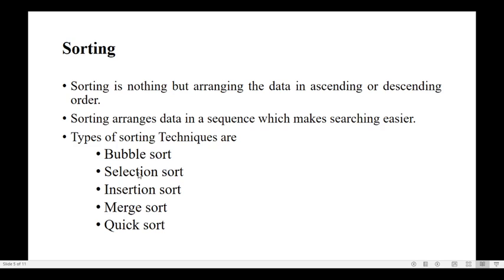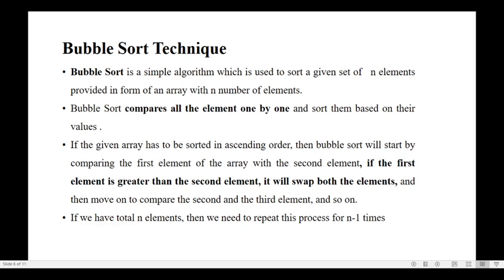In this session we are learning bubble sort. Bubble sort is a very simple algorithm. What we do here is take n number of elements — whatever elements are stored in the data structure. We accept n number of elements provided in the form of an array. Bubble sort will compare all elements one by one and sort them based on their values.